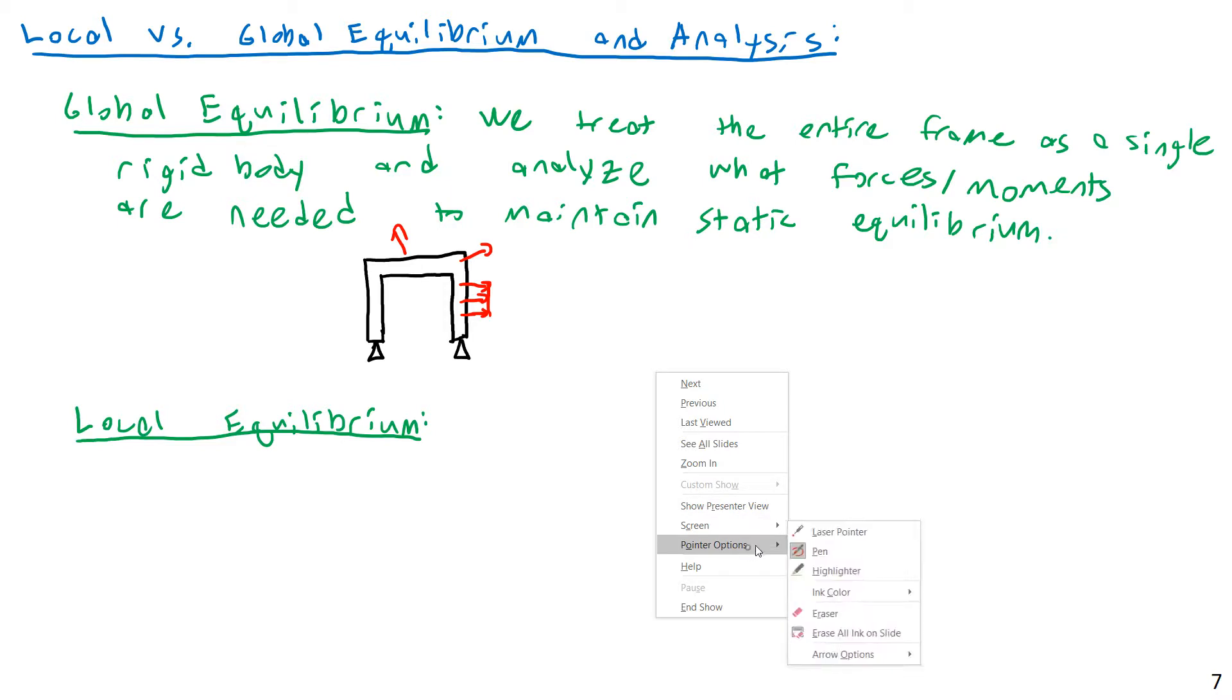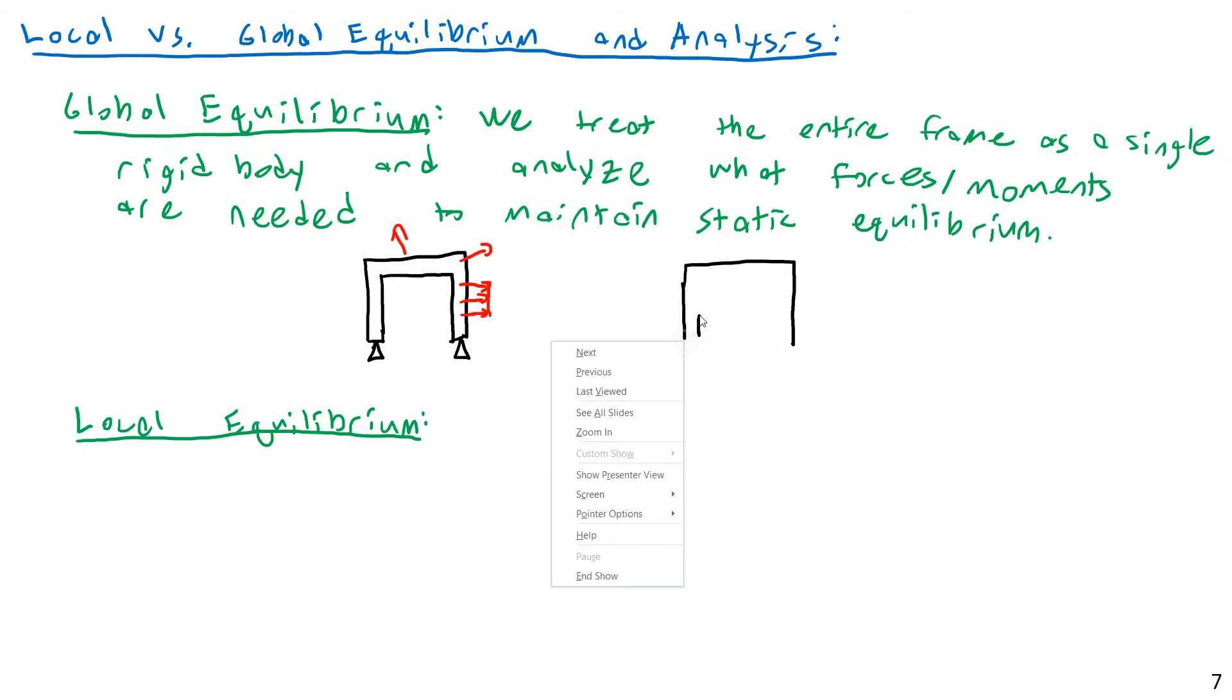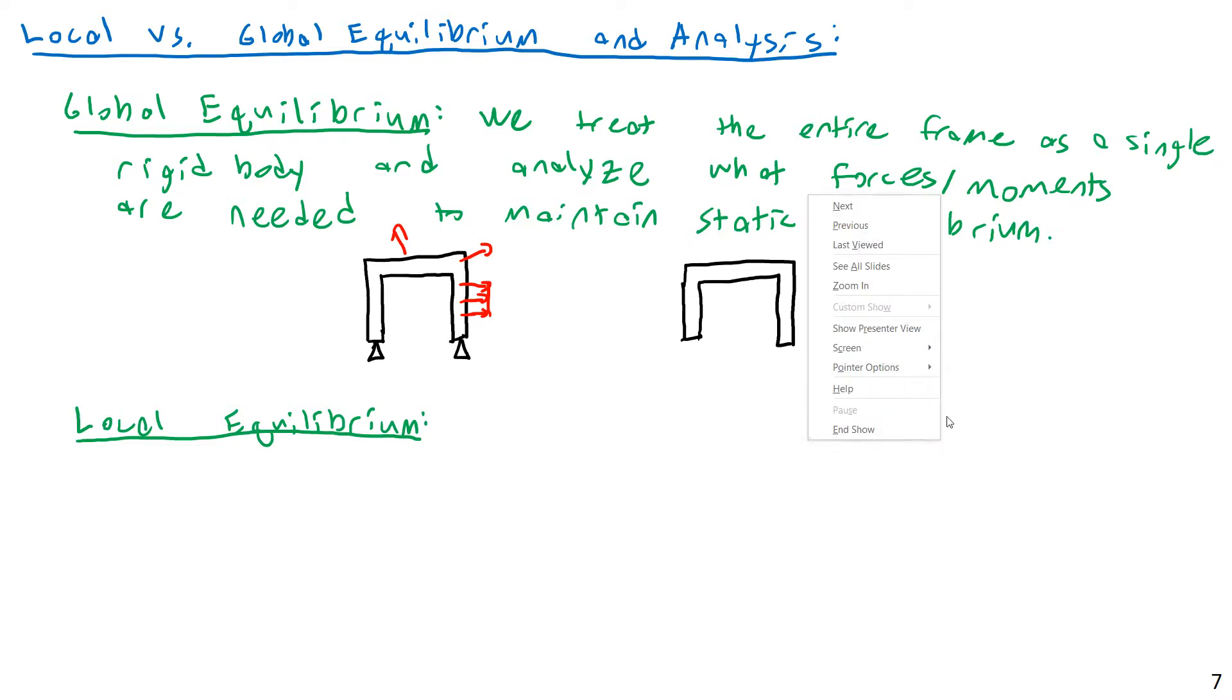If we wanted to analyze this in terms of global equilibrium, I would draw this entire thing not broken up. I would not look at any of the forces actually contained within the members. That is the crucial difference here. When we're doing global equilibrium, we are only looking at forces that are applied external to the frame. We are not looking at any of the forces that are revealed when we cut the frame up into its individual members. So that is global analysis, or global equilibrium.